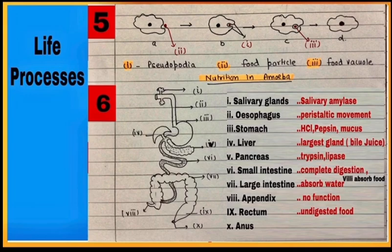Number 6, this diagram is of human digestive system. Learn names of all parts 1 to 10 and check functions of each part.